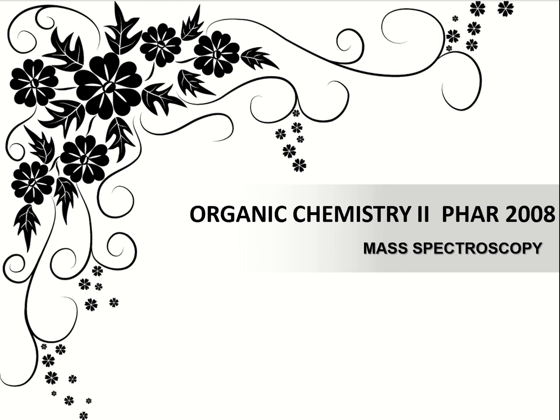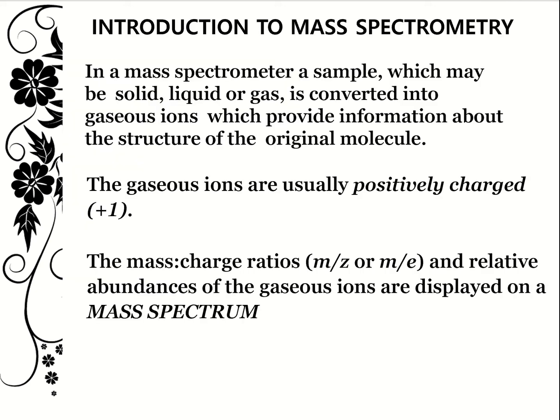Hi guys, welcome to another lecture in the series Organic Chemistry 2. Today we're going to be talking about mass spectroscopy. In a mass spectrometer, a sample which may be solid, liquid, or gas is converted into gaseous ions which provide information about the structure of the original molecule — information that might lead to the molecular formula of the original molecule.